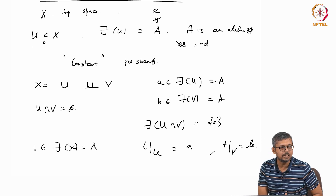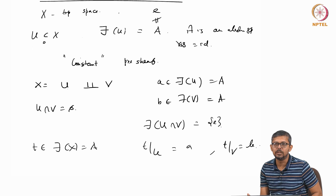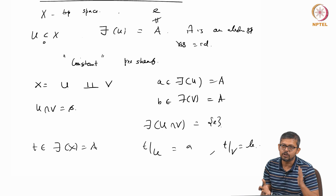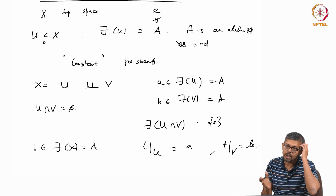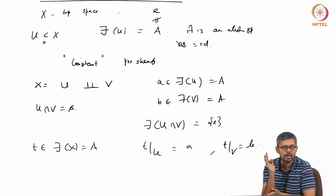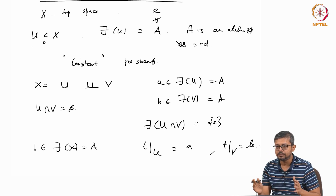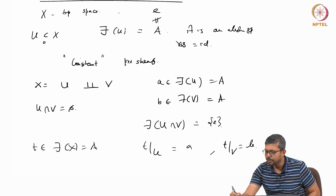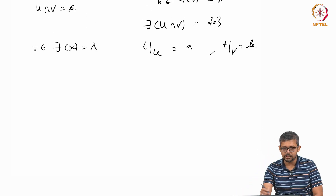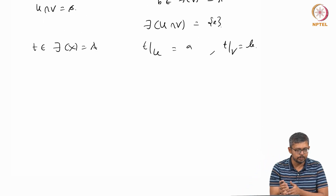Of course, if X is irreducible then you cannot have disjoint open subsets, so the argument does not apply. This only works when X is not irreducible — that is, when you have two open subsets whose intersection is empty. So this is the example of a pre-sheaf which is not a sheaf.